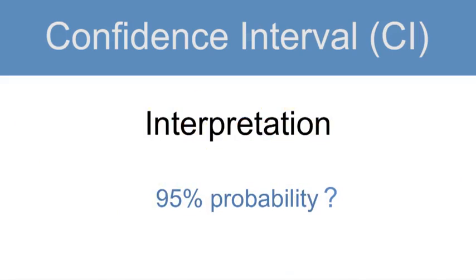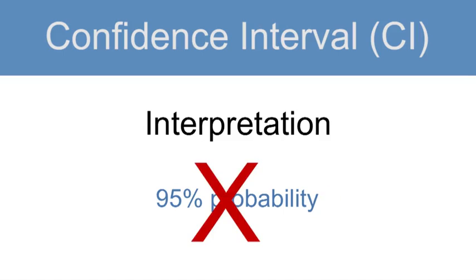A quick clarification on interpretation: when interpreting a 95% confidence interval, is it correct to say that there is a 95% probability that the true value lies within the interval? The answer is no, that is not correct. A probability is relevant to a process, not a specific interval.